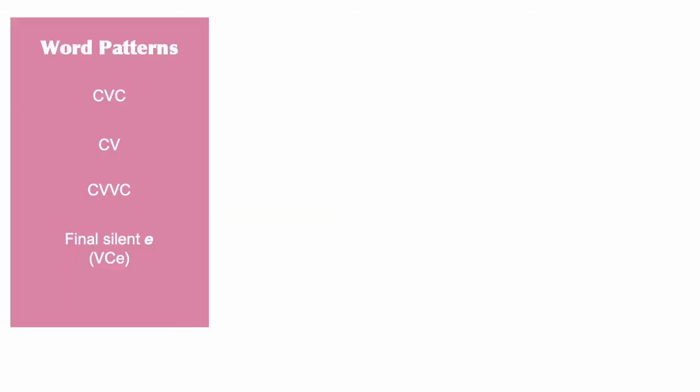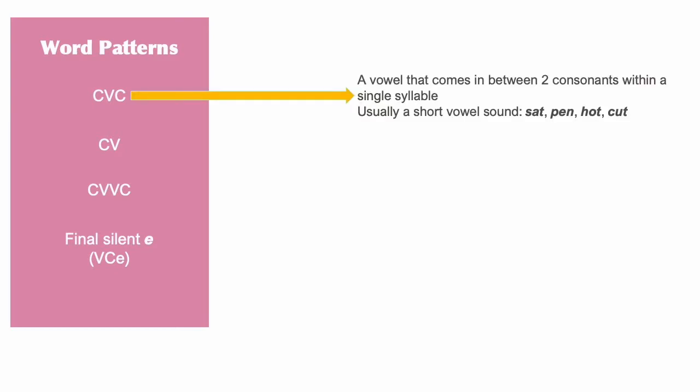CVC is an abbreviation for the consonant-vowel-consonant spelling pattern. In a CVC word, a vowel appears in between two consonants within the same single syllable. The vowel sound in a CVC word is usually a short vowel sound, like AH as in SAT.